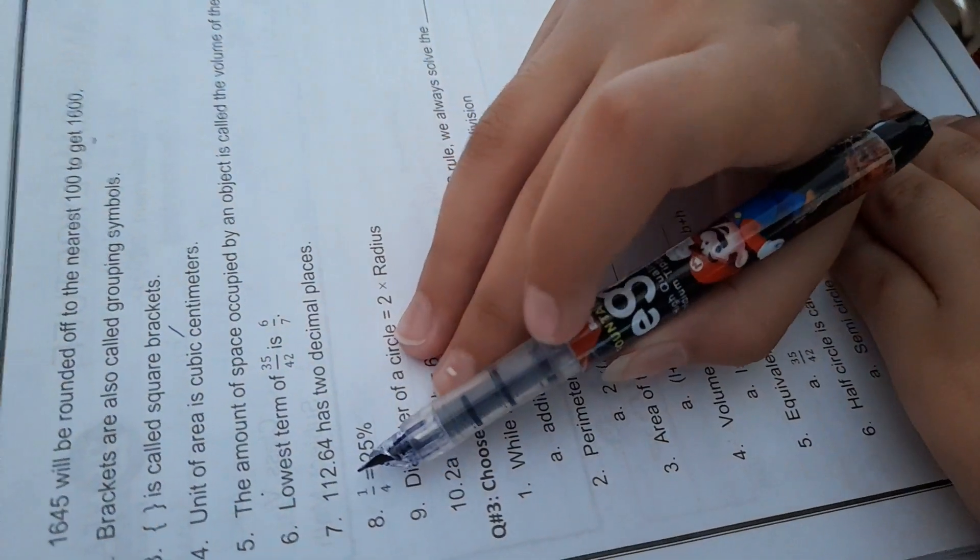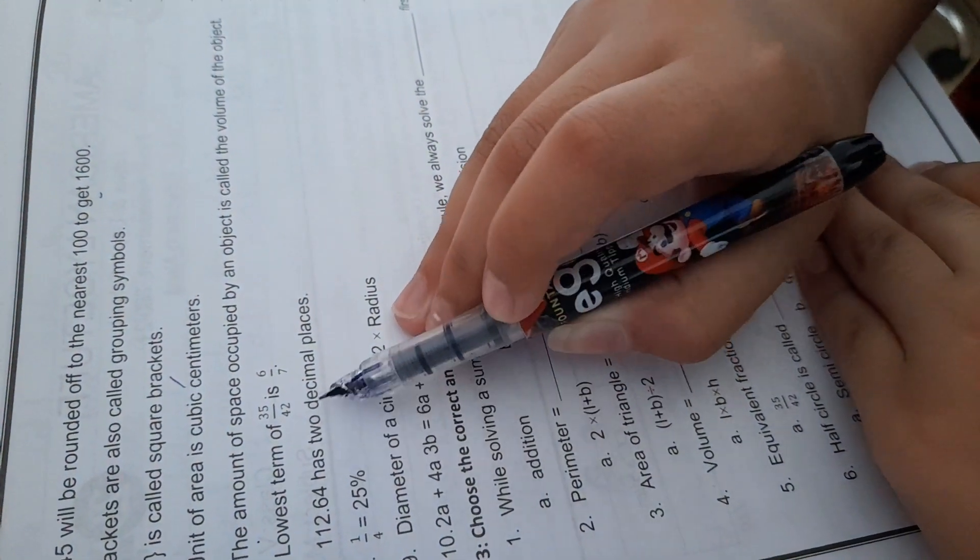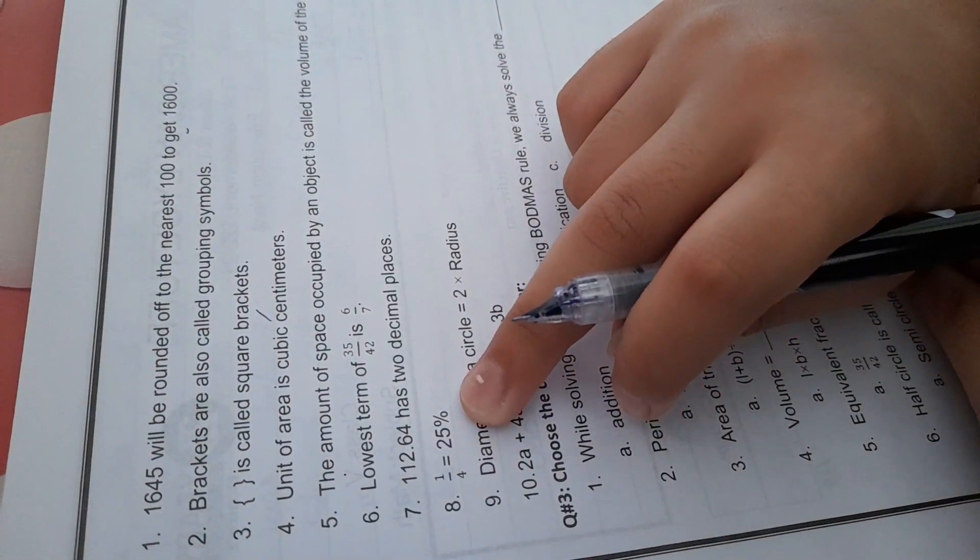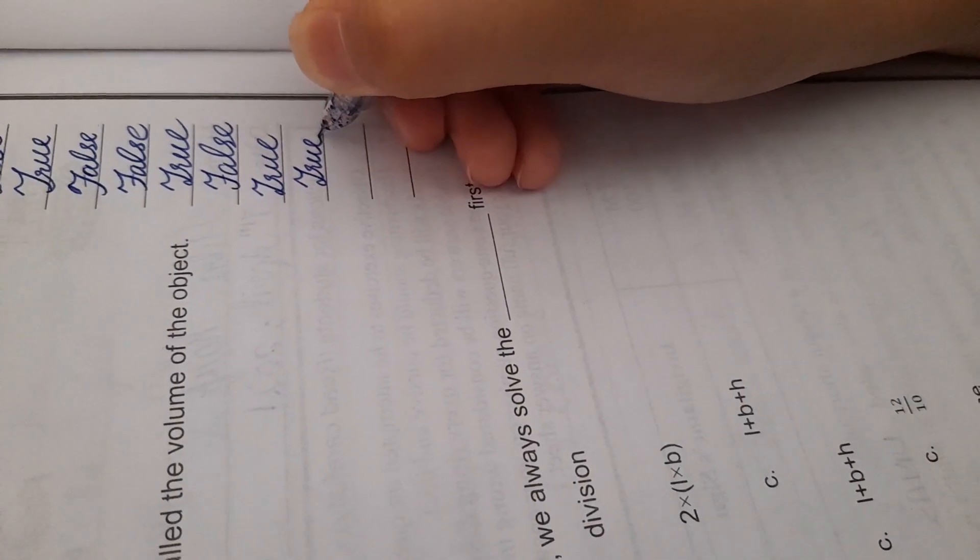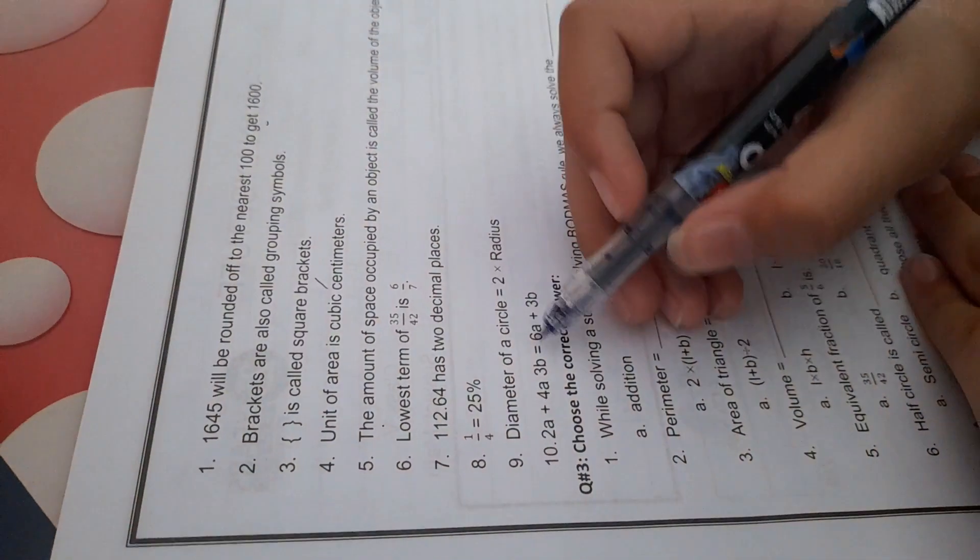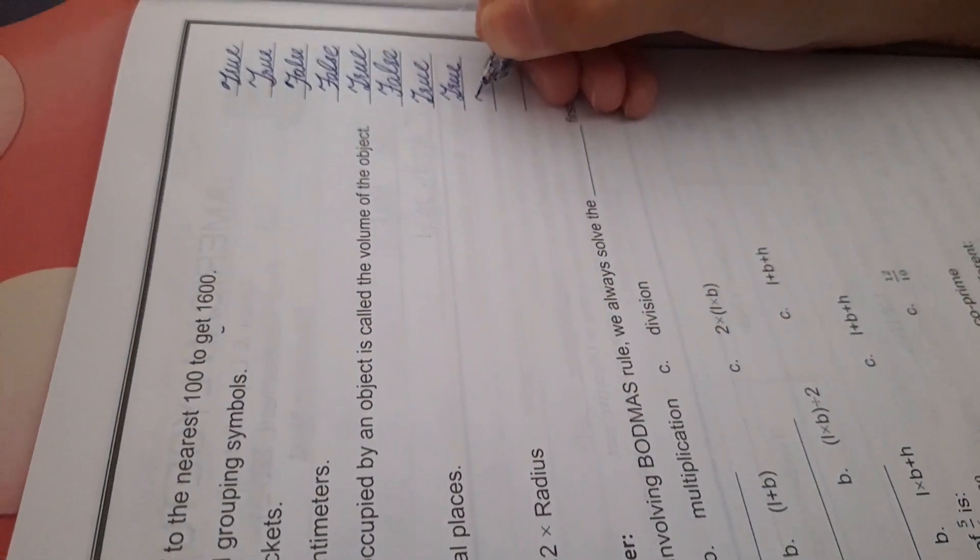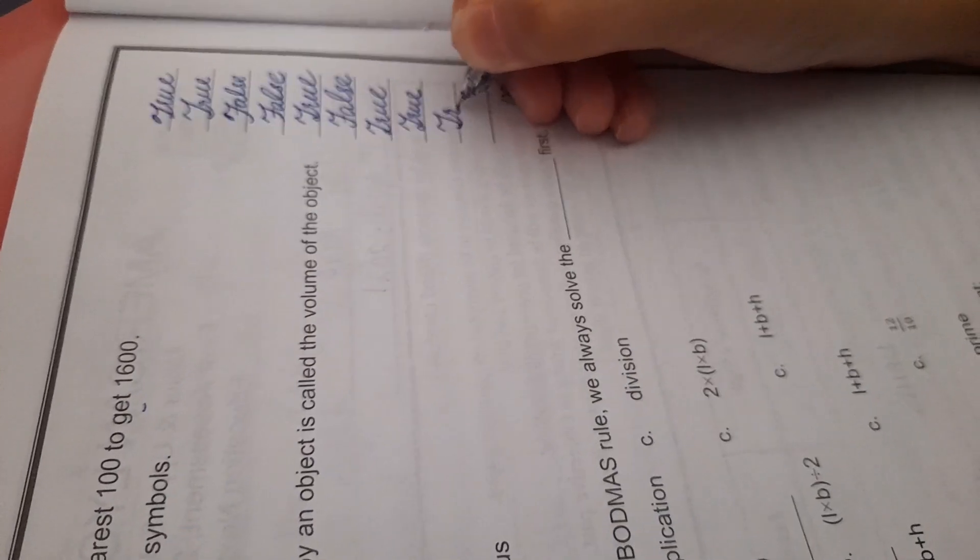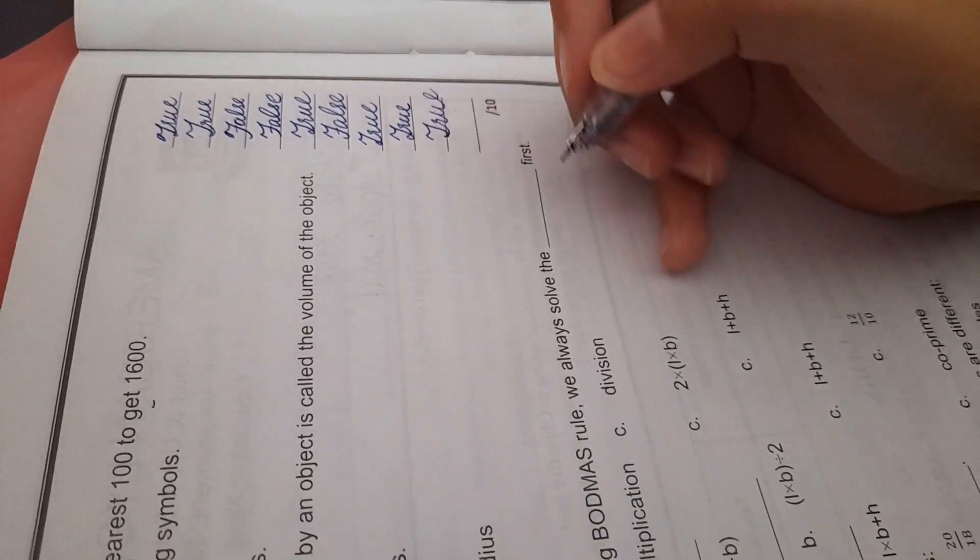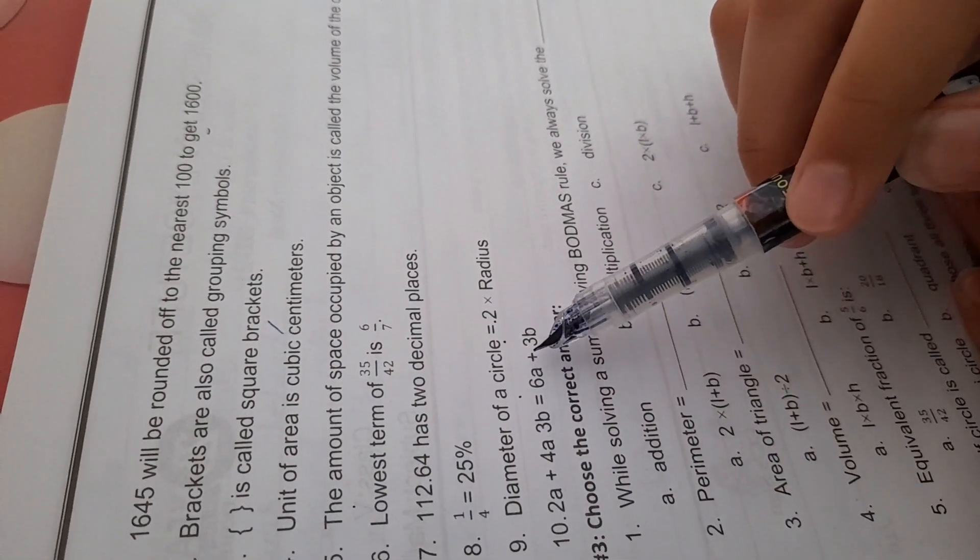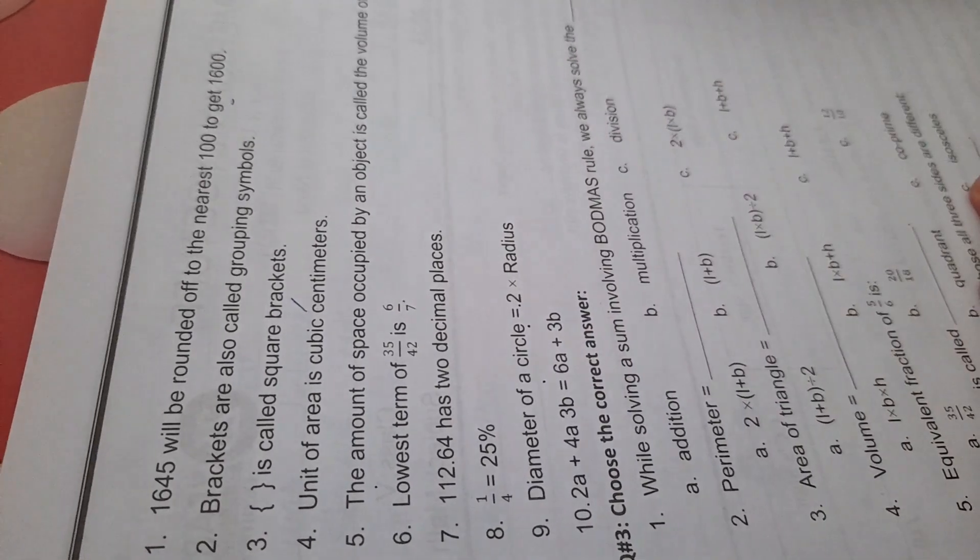112.64 has two decimal places. True. 1 by 4 equals 25 percent. True. Diameter of a circle equals 2 multiplied by radius. True. 2a plus 4a plus 3b equals 6a plus 3b. True.